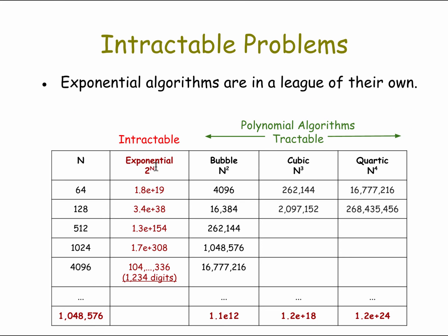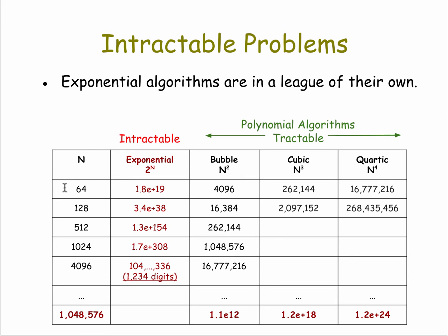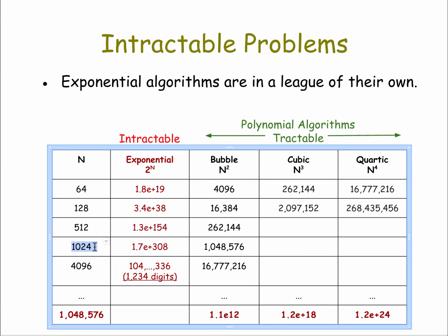This can perhaps be seen more easily in a table. We have these functions — 2 to the n (the exponential one) compared to n squared, n cubed, and n to the fourth. As you can see, for certain problems, even when the number of inputs is as low as 64 elements, an exponential algorithm would take time or space proportional to 1.8 × 10^19, which is a very big number. For those types of problems, it's completely out of the question to solve it for even a thousand inputs, unlike polynomial algorithms that could work for millions of inputs in many cases.